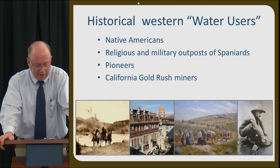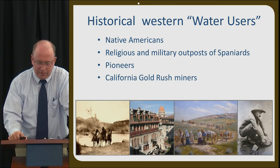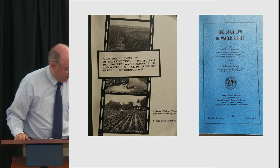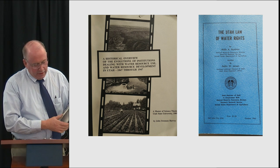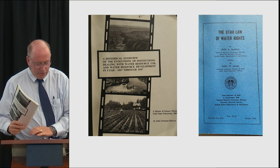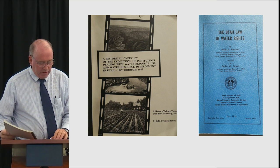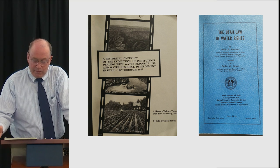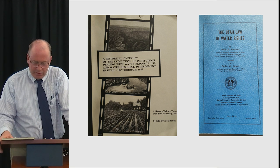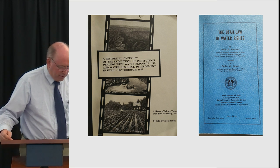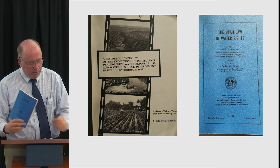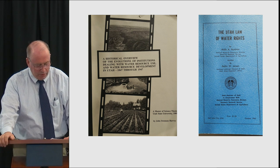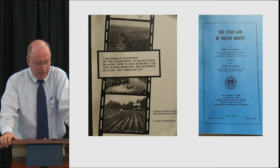I want to share with you a couple of books I find quite instructional as you learn about water law. The first is entitled An Historical Overview of the Evolutions of Institutions Dealing with Water Resource Use and Water Resource Development in Utah 1847–1947, by John Harvey Swenson — a master's thesis at Utah State University, published by the Department of Natural Resources. Also, I refer to and have learned much from The Utah Law of Water Rights, written by Hutchins and Jensen. Both publications provide a historical background to our discussion today.